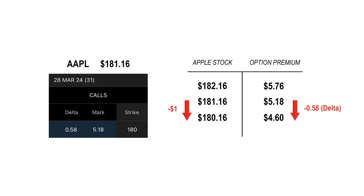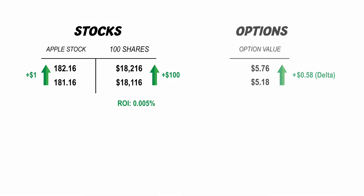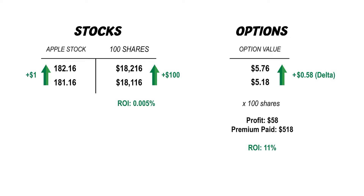Now here's why options are so attractive. Aside from the leverage, the return I get on my money is much higher. If I bought 100 shares of Apple at $181.16 and it moved up to $182.16, I would have made $100 on my $18,000 investment — which is like a fraction of 1% return. But my one call option made $0.58 on $5.18. Since one contract equals the same 100 shares, that comes out to a total of $58 profit on just a $518 investment, which is about an 11% return on my money.